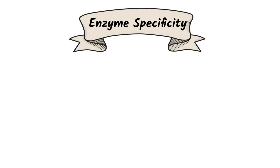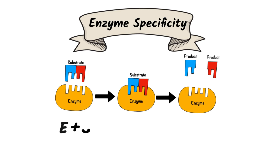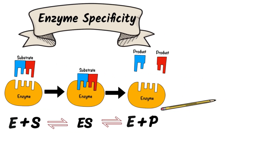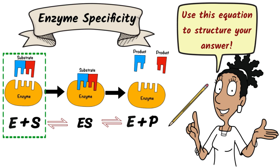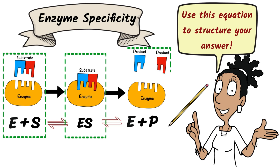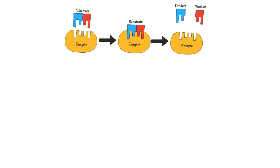It's easy to understand enzyme specificity when you examine the diagram. You can see that the enzyme and the substrate fit together in a very particular way — they have complementary shapes. Use the equation to structure your answer. It begins with an enzyme and a complementary substrate binding together to form an enzyme-substrate complex, and the reaction proceeds to yield the enzyme and the product or products.